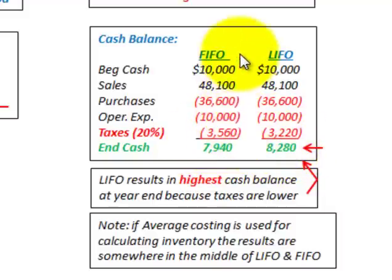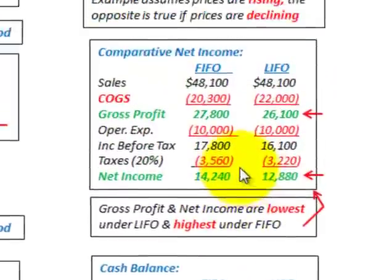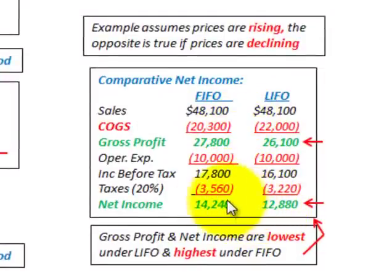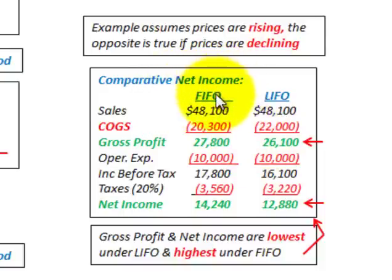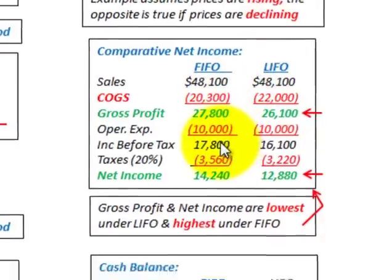Going back to net income, you can see just the opposite is true — FIFO has greater net income than LIFO. That's the key point of this comparative analysis: for net income, FIFO wins; for cash balance, LIFO wins. We looked at both FIFO versus LIFO for net income and for cash balance.